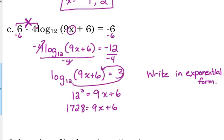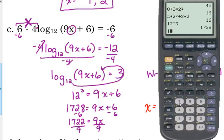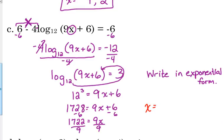12 cubed is equal to 9x plus 6, 1728. Okay? Now, this is just a linear equation to solve now. Subtract 6, 1722, and divide by 9. X is equal to, and let's see if that will reduce, 574 over 3.